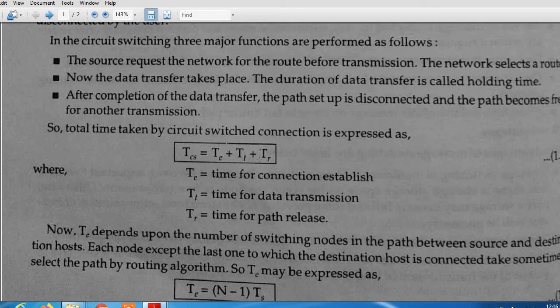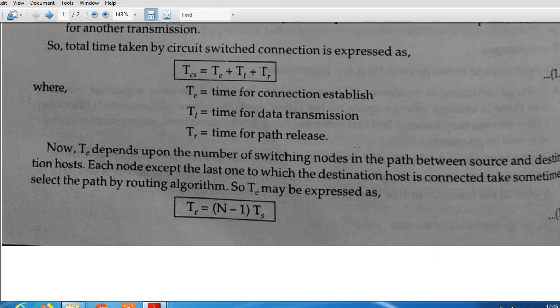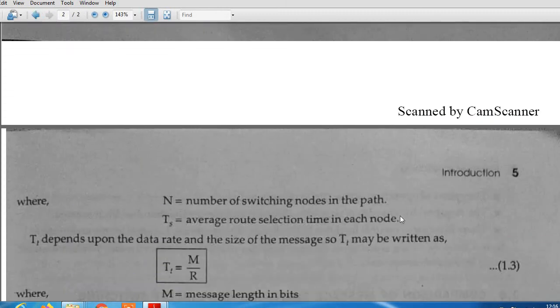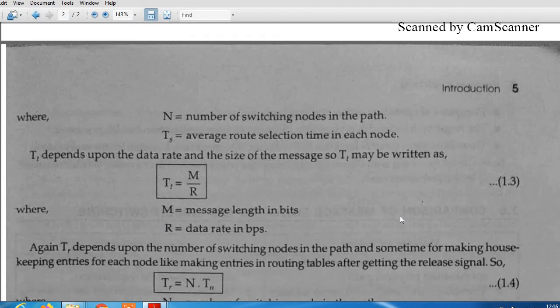Te depends upon the number of switching nodes in the path between the source and the destination. Te can be expressed as (N-1) times Ts, where N is the number of nodes and Ts is the average switch selection time in each node. For each and every node, they require some time, and that time is called Ts.